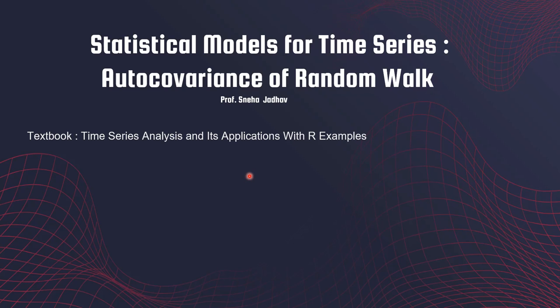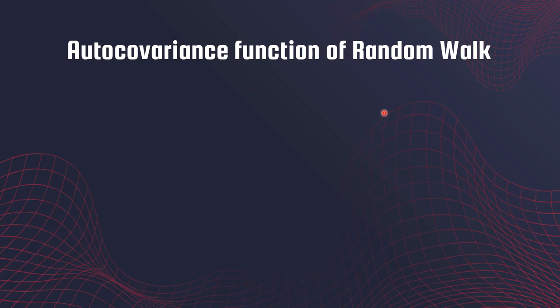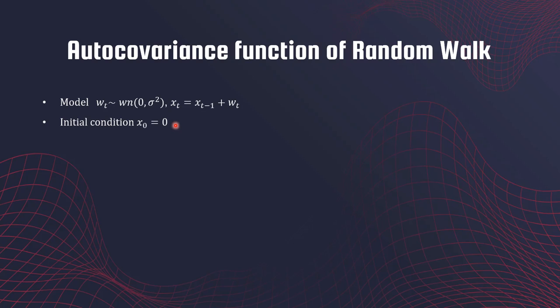Hey everyone, welcome back. In this video we shall see how to calculate auto covariance of a random walk and also look at a couple of practice problems. For a random walk we have white noise and the random walk model starts at zero as the initial condition. Recall that this random walk has an alternative representation that we have seen earlier in class.